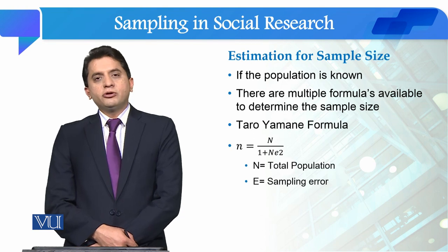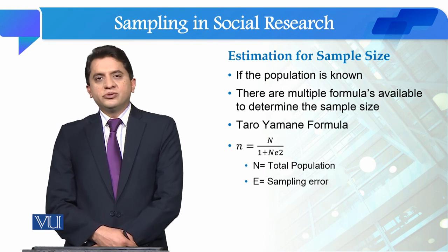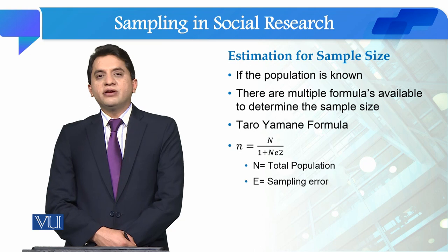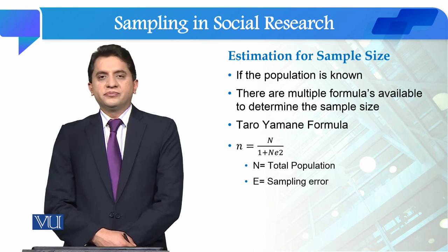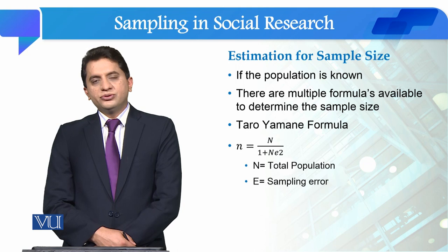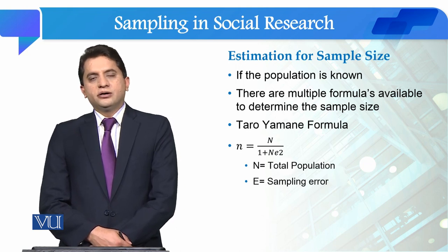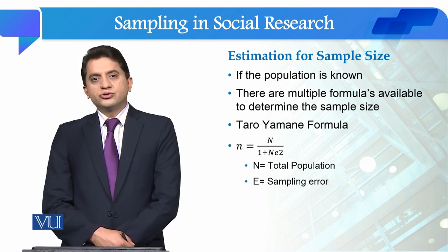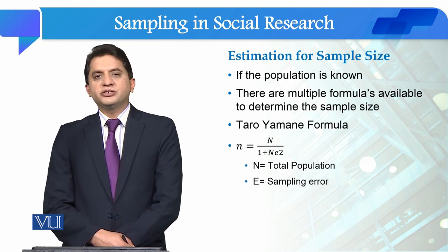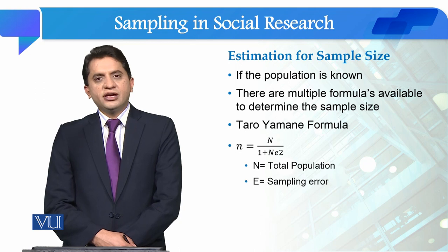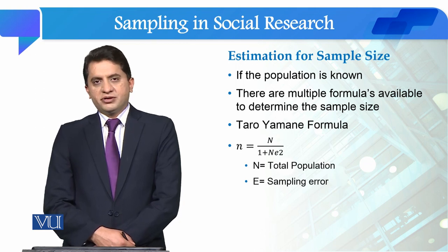If the population is known, the estimation method is different from when the population is not known. When the total number of the population is known, the formula or estimation mechanism is entirely different from when you don't know the population.